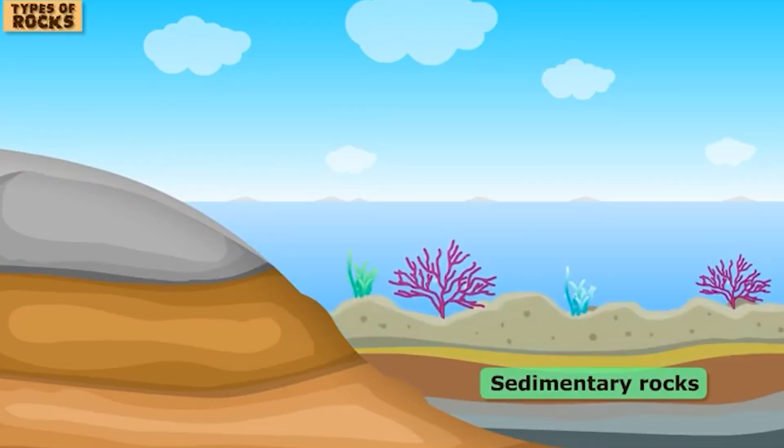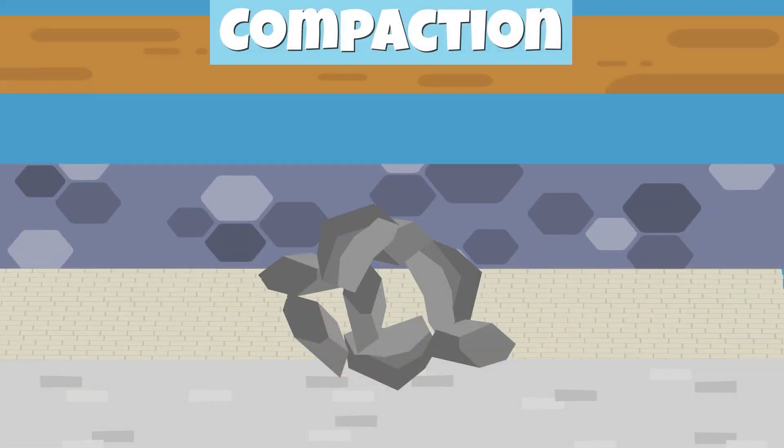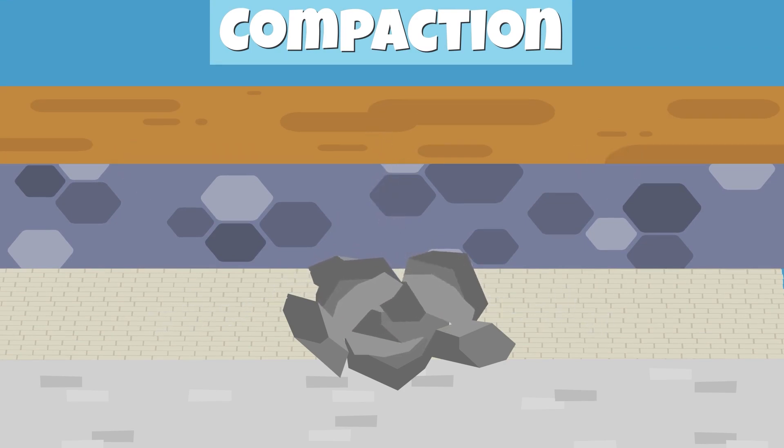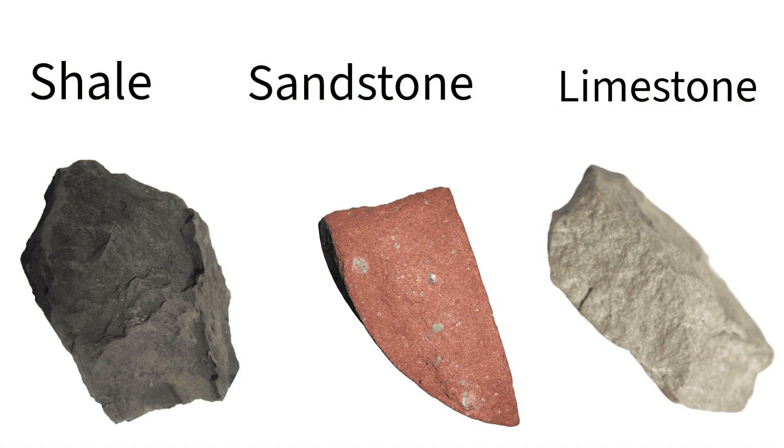This process leads to the formation of sedimentary rocks. As the layers of sediment build up, the weight of the layers above compress the particles below, and with enough pressure, they become solid rock. This process, known as lithification, forms rocks like sandstone, limestone, and shale.